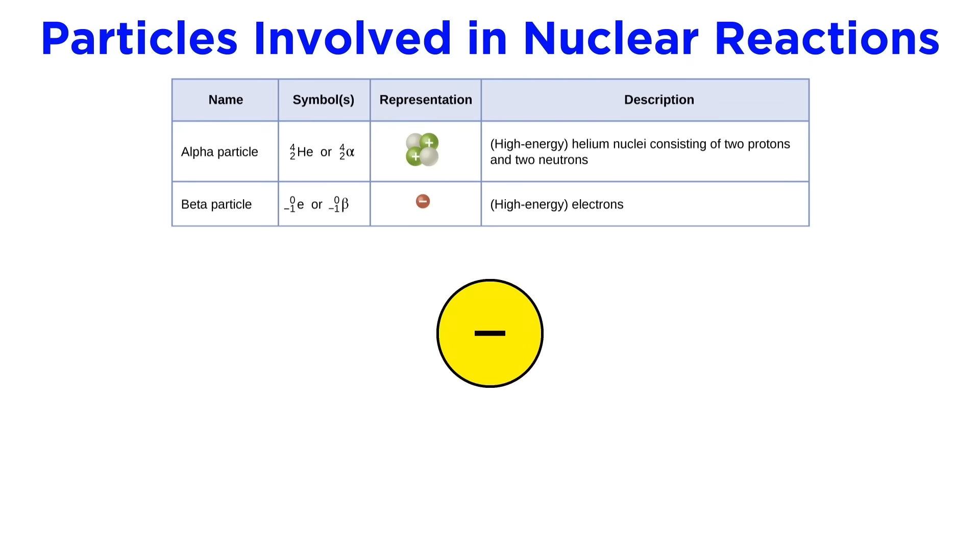Next is the beta particle. These are high energy electrons, and we can represent them with either an uppercase beta or an E for electrons. Note that the mass of the electron is negligible, so in the nuclide symbol we put a zero for mass. However, we put a negative one for atomic number, because it will cancel out a positive charge from a proton.